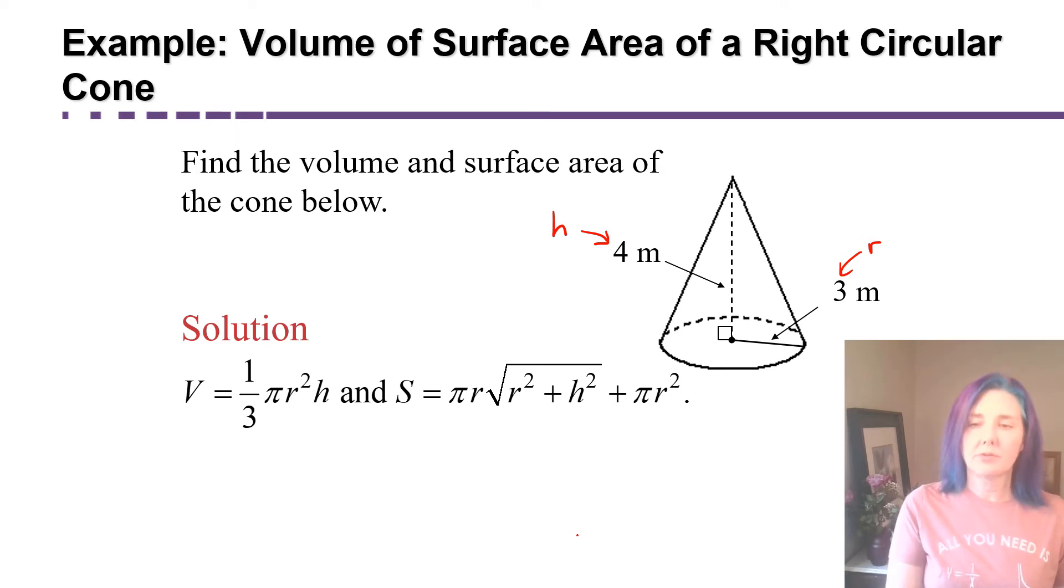from the base, the center of the base, up to the tip, which is 4. So my volume will be one-third times pi times three squared times four.